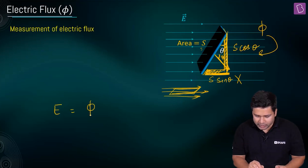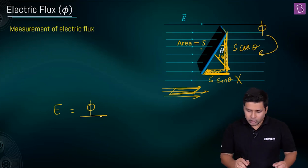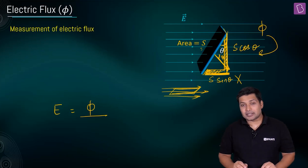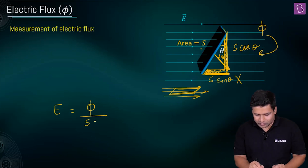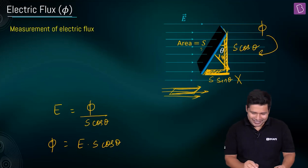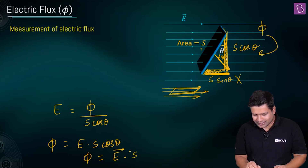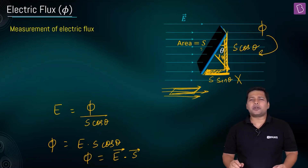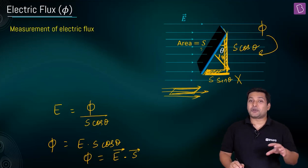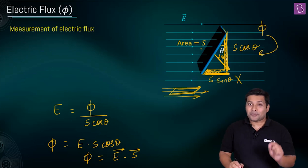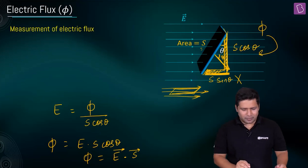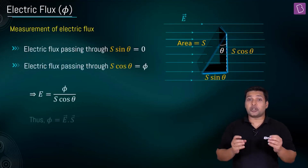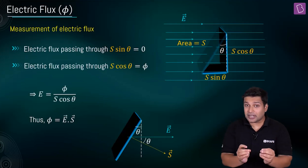Whatever flux we get passes through S cosθ only — the normal component. Writing E = φ/S, the area we take is S cosθ, giving us φ = E × S cosθ. This is nothing but the dot product of two vectors, so φ = E⃗ · S⃗, where theta is the angle between the area vector and the electric field vector. Since the dot product is a scalar product, electric flux is a scalar quantity.